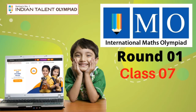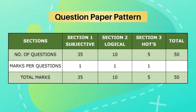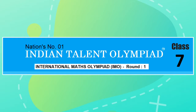Hello everyone, welcome to Indian Talent Olympiad. Today we will go through the Round 1 question paper of ITO's International Maths Olympiad for Class 7. The question paper consists of 50 questions: 35 questions are of subjective, 10 questions are of logical reasoning, and 5 questions are of high order thinking. This 50-question exam holds 50 marks. You can write the answers one by one on a blank piece of paper and then compare them with the answer key at the end of the question paper.